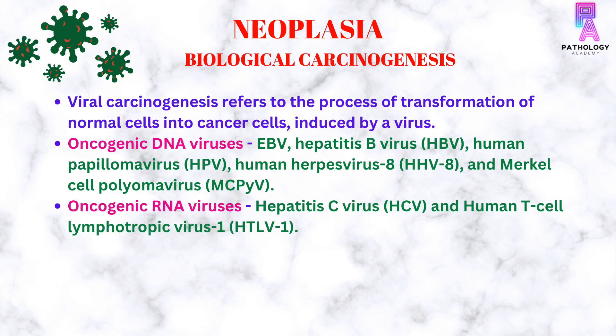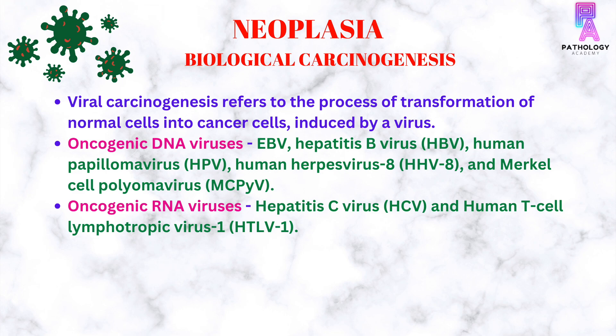Viral carcinogenesis is a type of biological carcinogenesis, which refers to the process of transformation of normal cells into cancerous cells induced by a virus. Oncogenic DNA viruses include Epstein-Barr virus, Hepatitis B virus, human papillomavirus, human herpesvirus-8, and Merkel cell polyomavirus. Oncogenic RNA viruses include Hepatitis C virus and human T-cell lymphotropic virus-1.